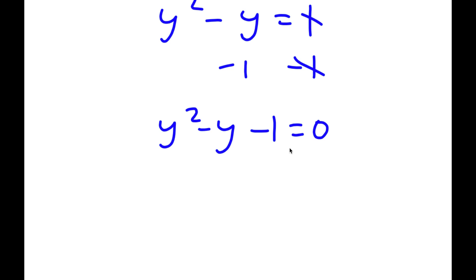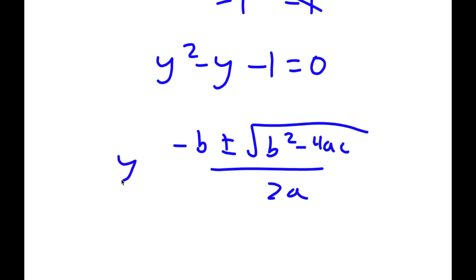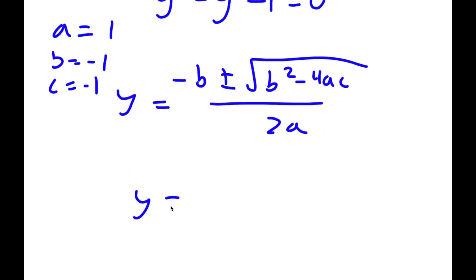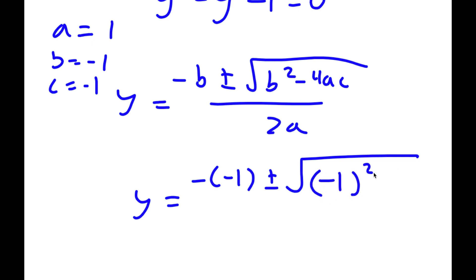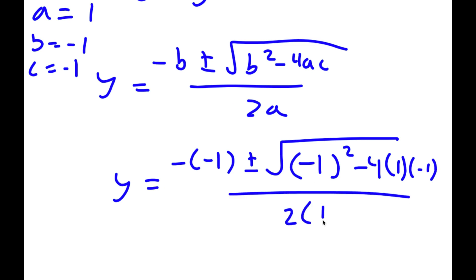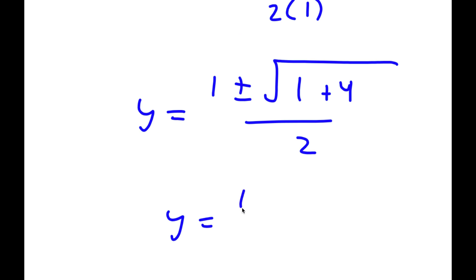Now I have a quadratic equation to solve. The quadratic formula is negative b plus or minus the square root of b squared minus 4ac, all over 2a. In this case, a equals 1, b equals negative 1, and c equals negative 1. So y equals negative of negative 1, plus or minus the square root of negative 1 squared minus 4 times 1 times negative 1, all over 2 times 1. That simplifies to 1 plus or minus the square root of 1 plus 4 over 2, which equals 1 plus or minus the square root of 5 over 2.